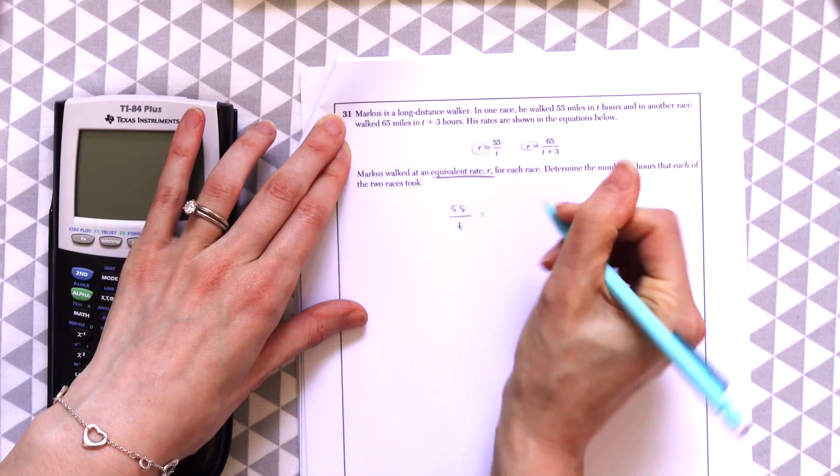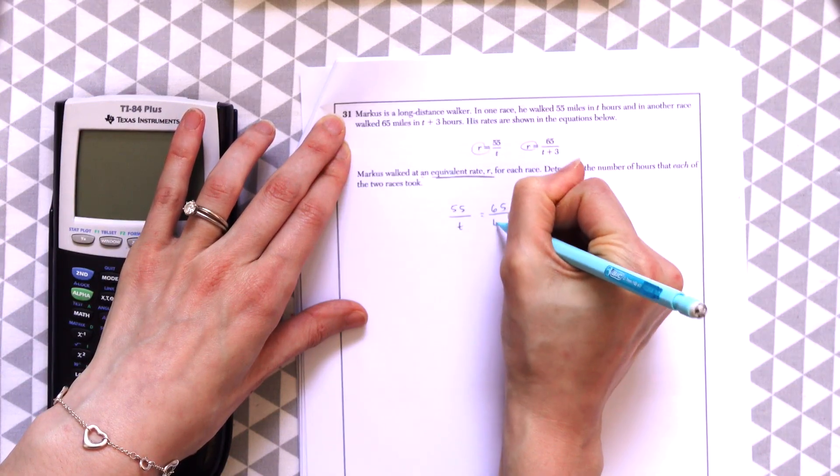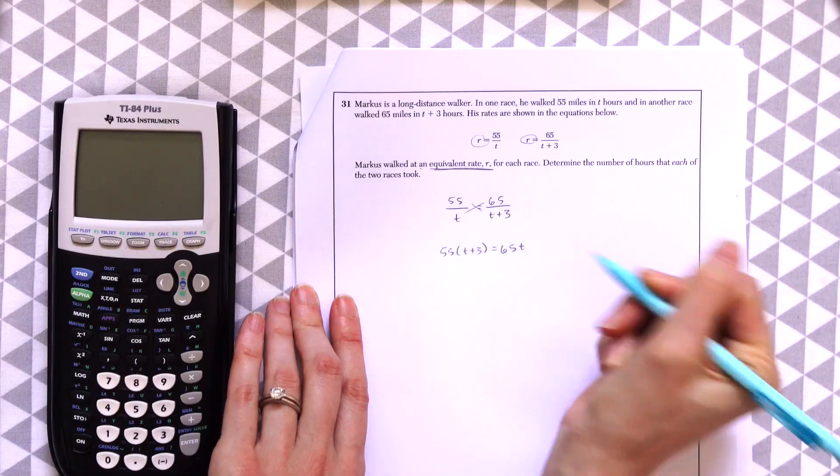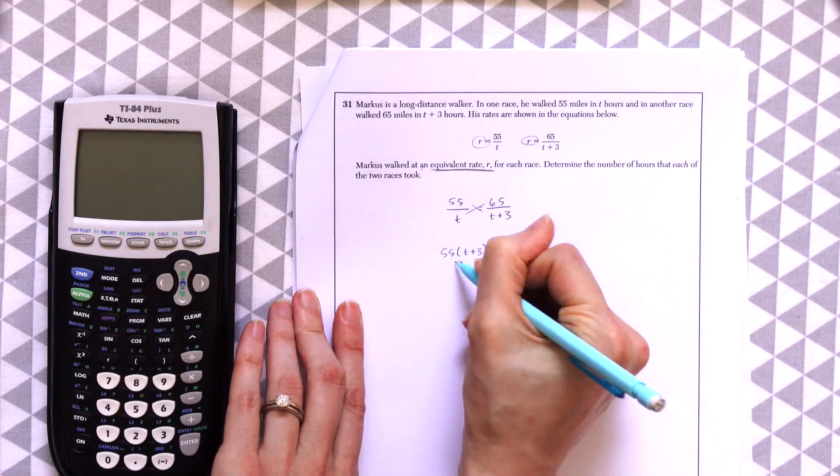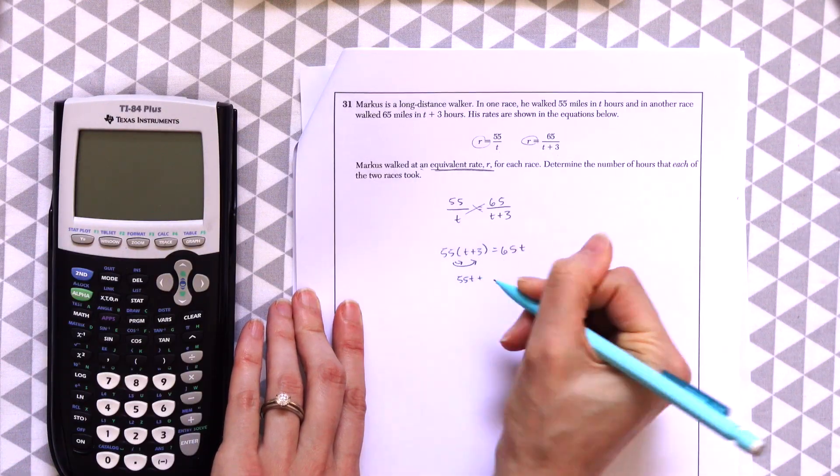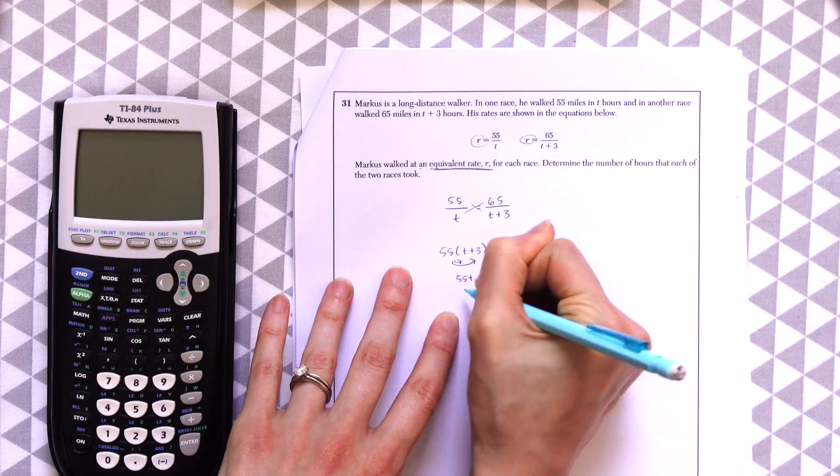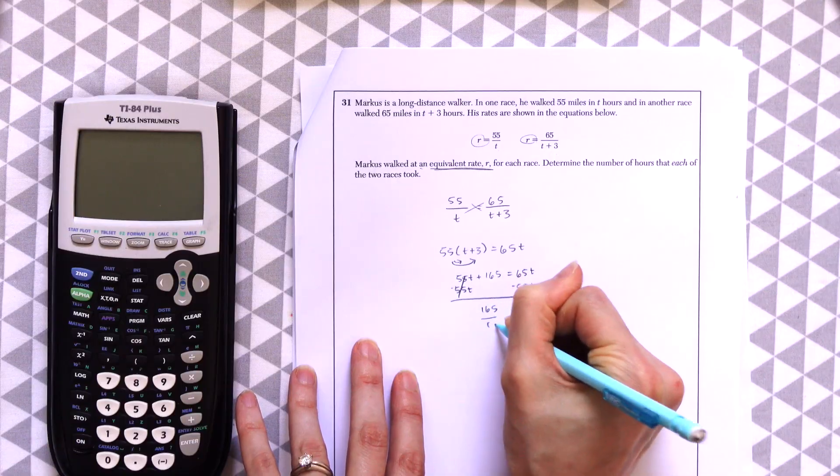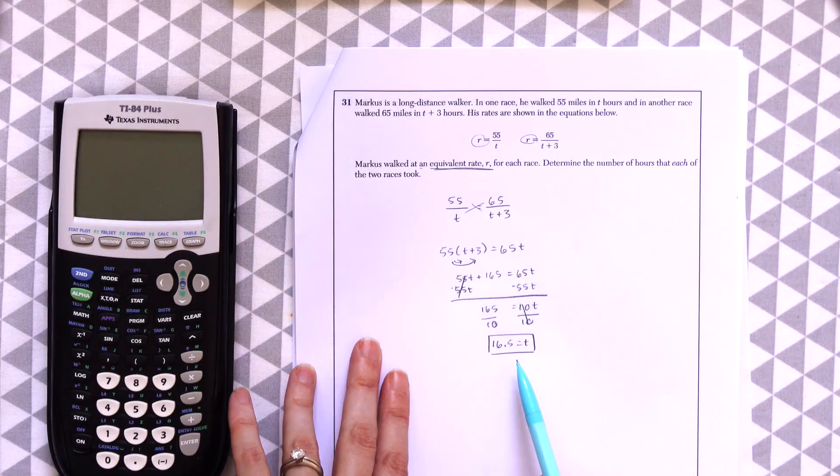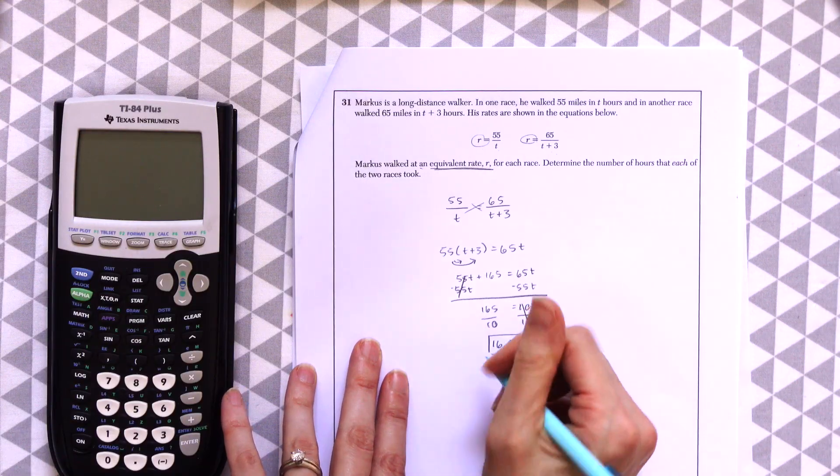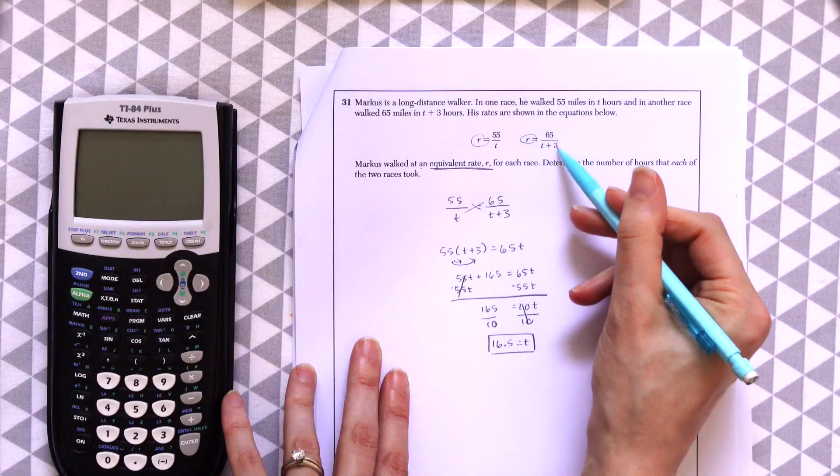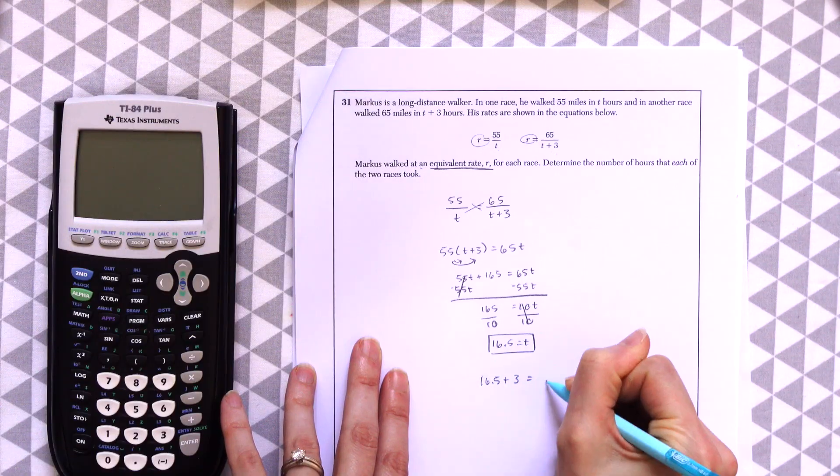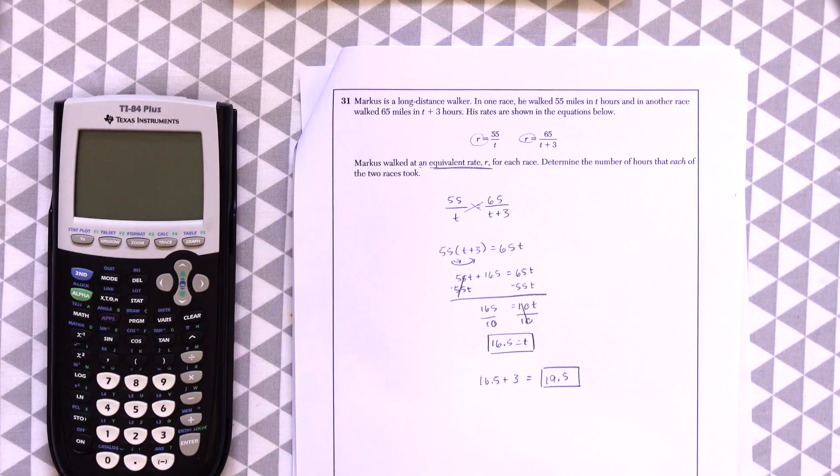So we have 55 over t, and then we have 65 over t plus 3. And then we could do some cross multiplying. And then just treat this like a normal algebraic function. 16.5 equals t. And then we're also going to need to take that t to find that number of hours for the other rate, which would just be 16.5 plus 3, which would give us 19.5. And those are our answers.